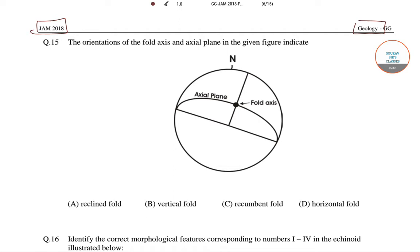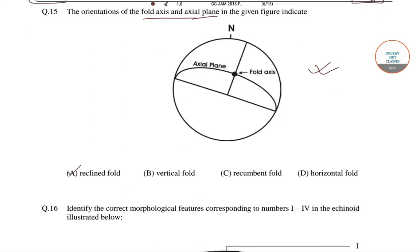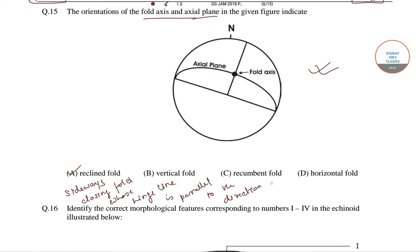In the first question, we have to say which of the following is the correct orientation of the fold axis and axial plane as given in this figure. The correct answer is option number A, that is, reclined fold, which is a sideways closing fold whose hinge line is parallel to the direction of depth of the axial plane.